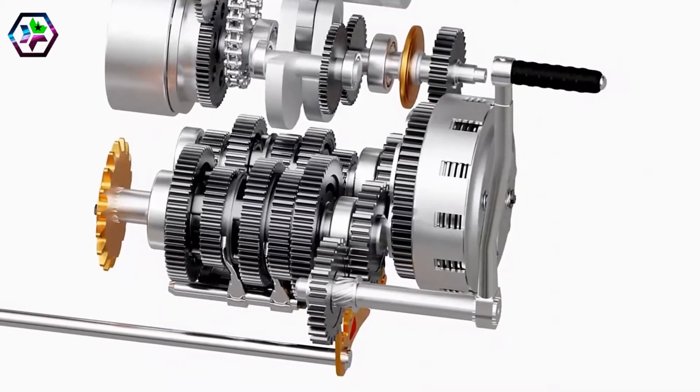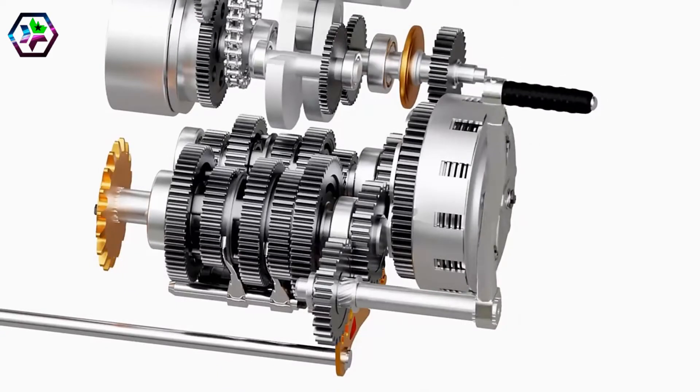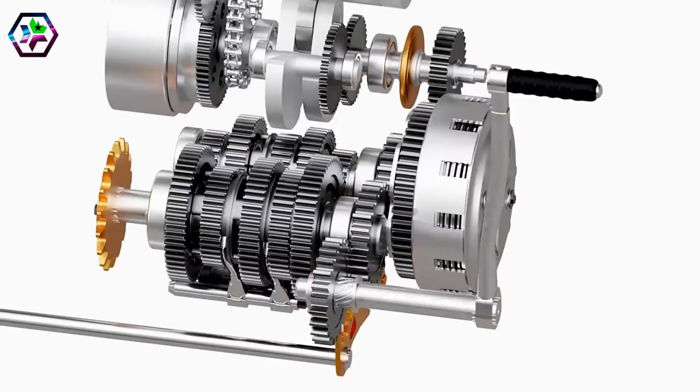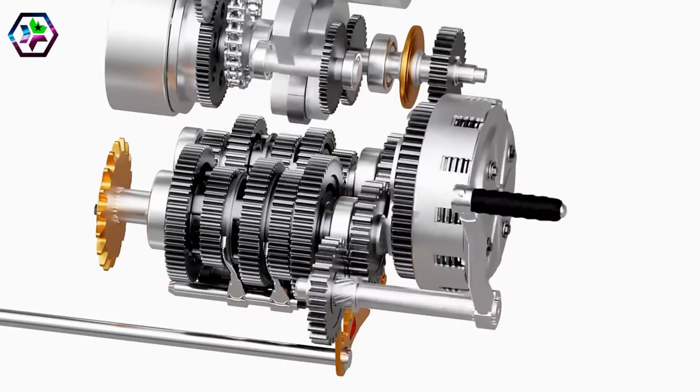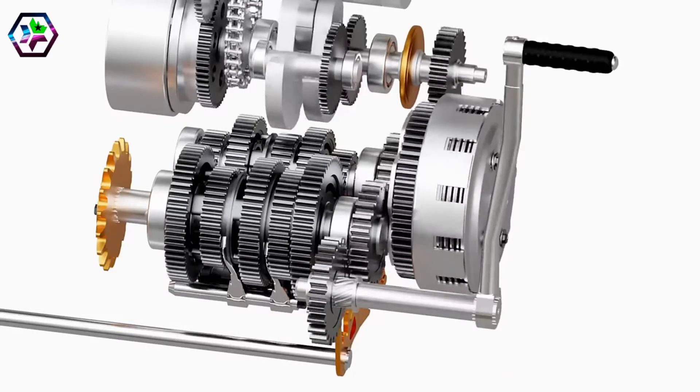A kickstarter mechanism is simple yet interesting. As the kickstarter lever is descended, a helical spline forces the gear to slide and engage with a freewheeling gear on the main shaft. As the lever is descended further, the gear spins on its axis and transfers the power to the clutch hub.